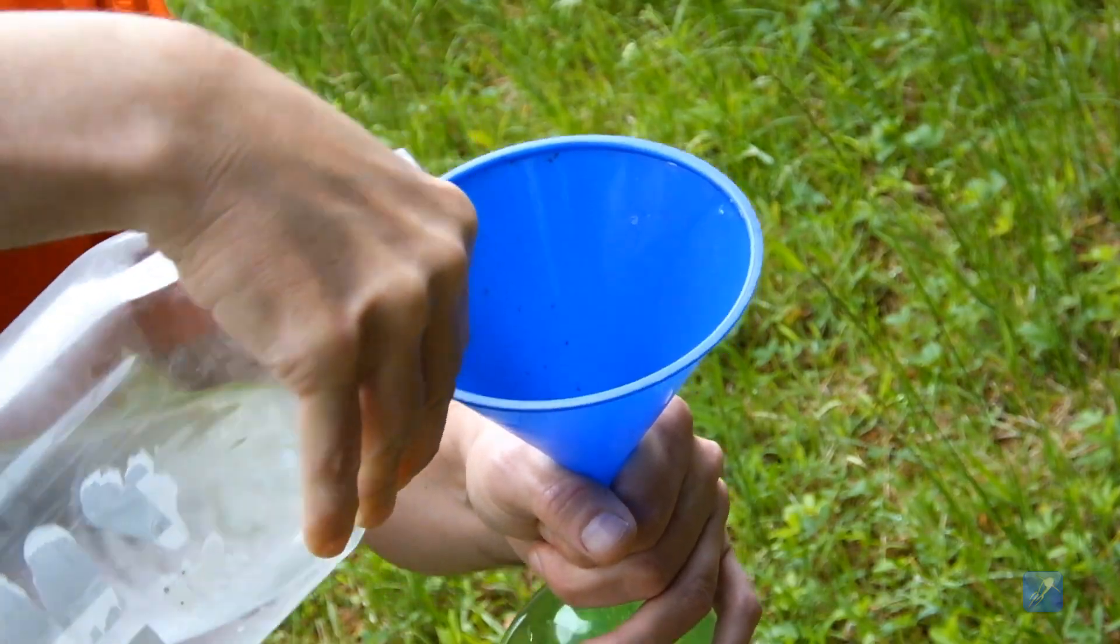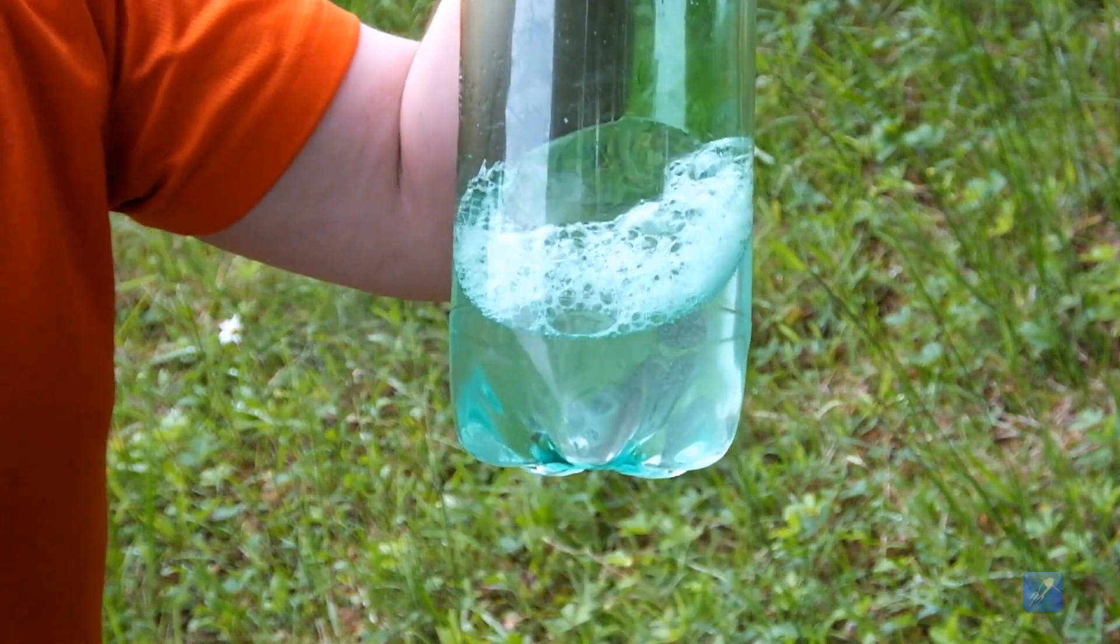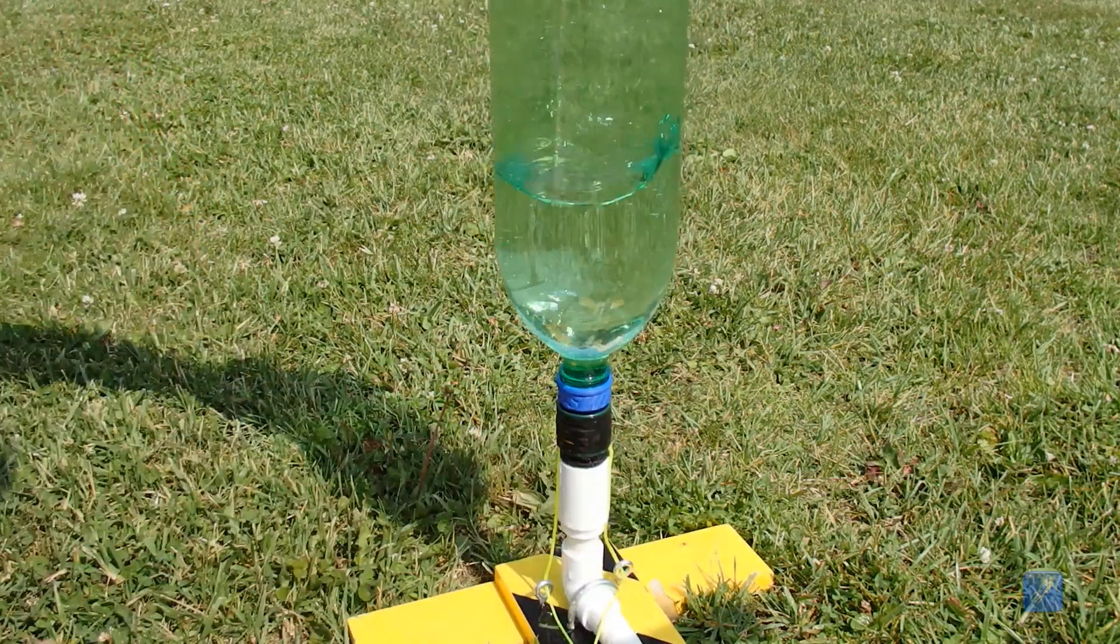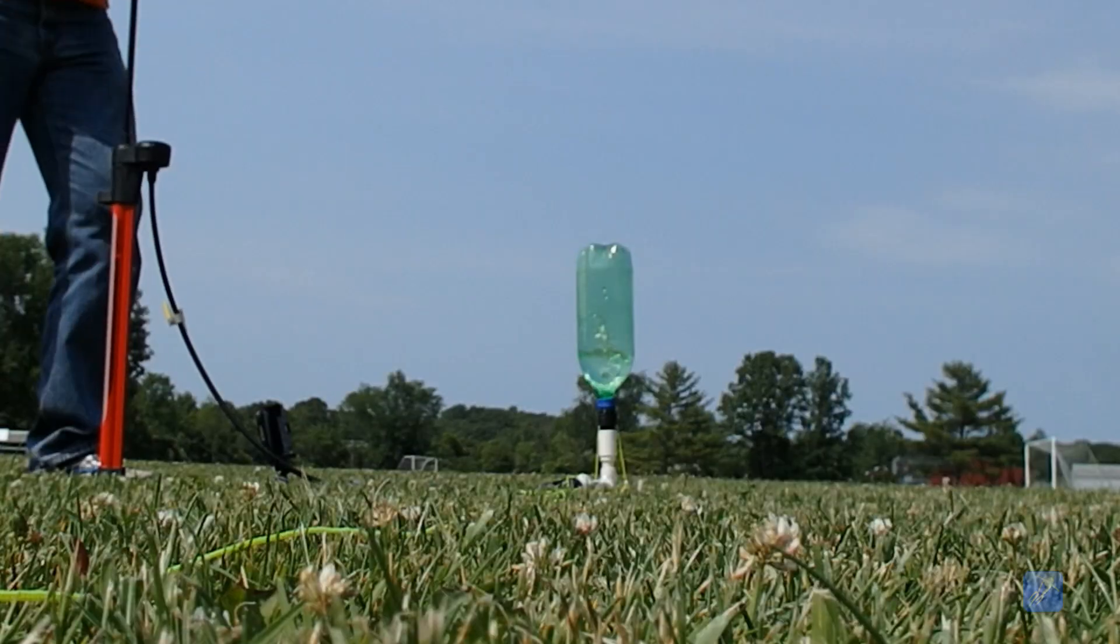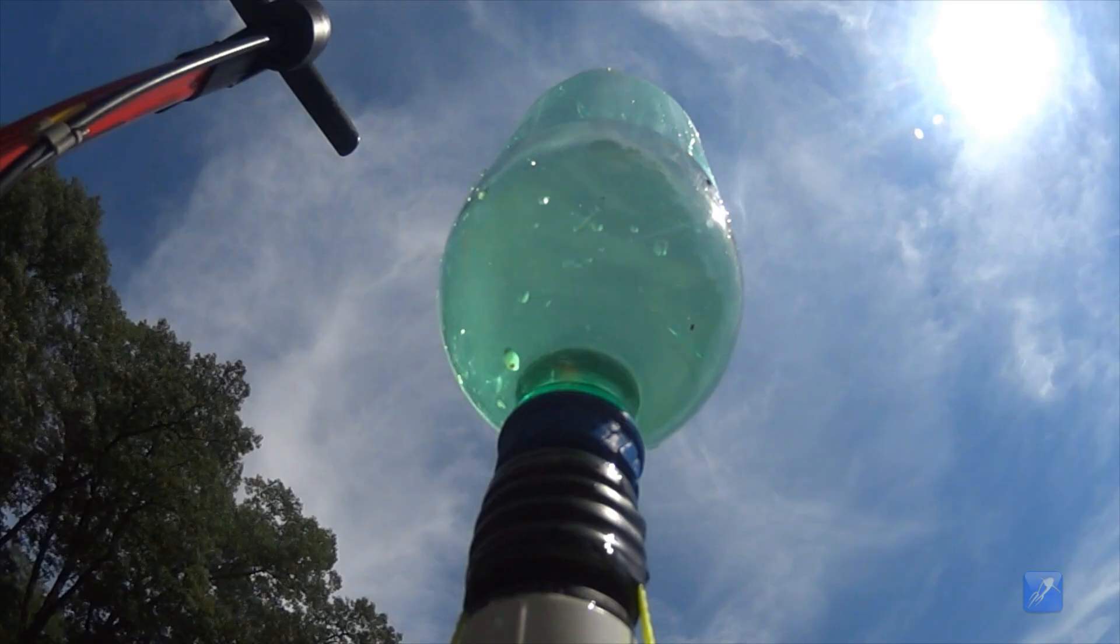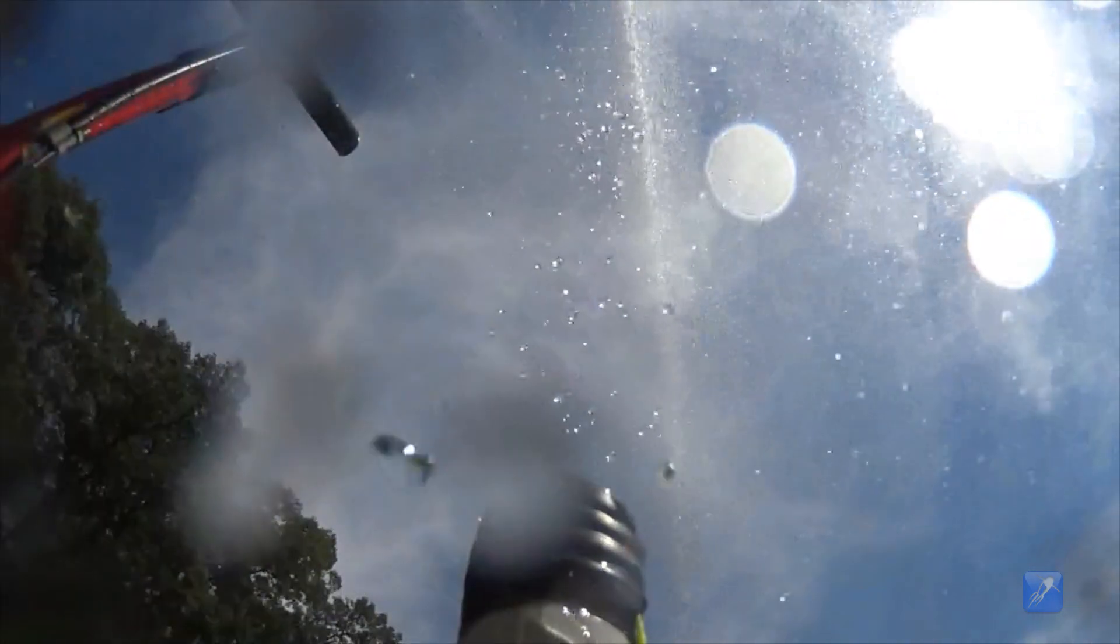To fire this rocket, all you need to do is fill it one-third of the way with water, screw on the nozzle, lock it into place on the launcher, connect your air supply, and then fill it with air. When you reach the target pressure, you can then pull the release string and the rocket will take to the air.